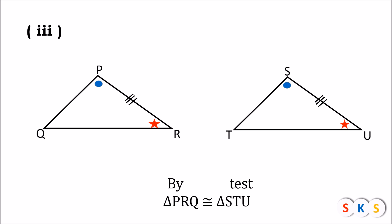In question number three, angle P and angle S got a same kind of mark, therefore angle P is congruent to angle S. Side PR and side SU got a same kind of mark, therefore side PR is congruent to side SU. Angle R and angle U got a same kind of mark, therefore angle R is congruent to angle U. So angle P congruent to angle S, side PR congruent to side SU, and angle R congruent to angle U — therefore these two triangles are congruent by Angle-Side-Angle test.